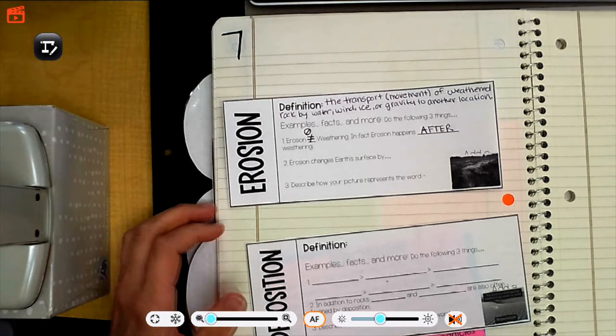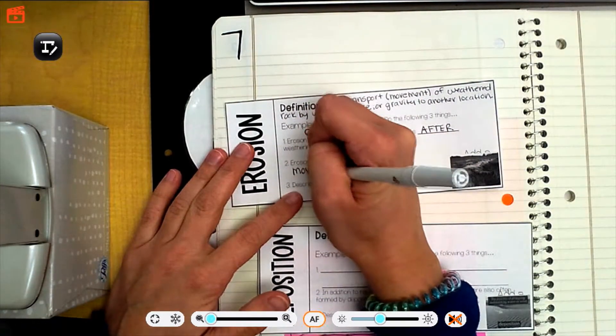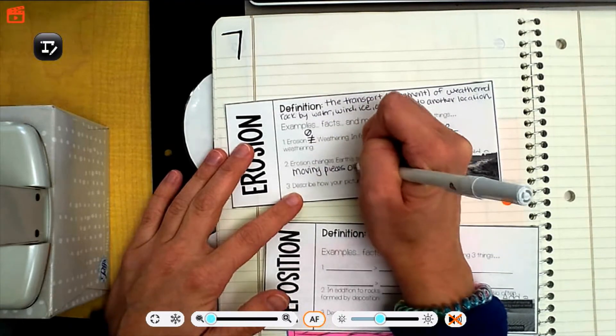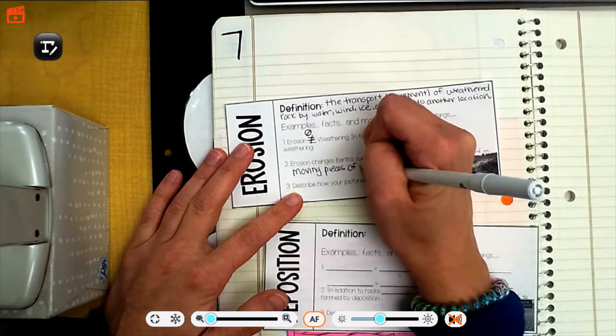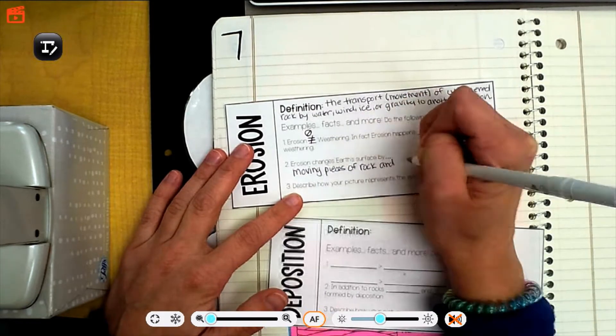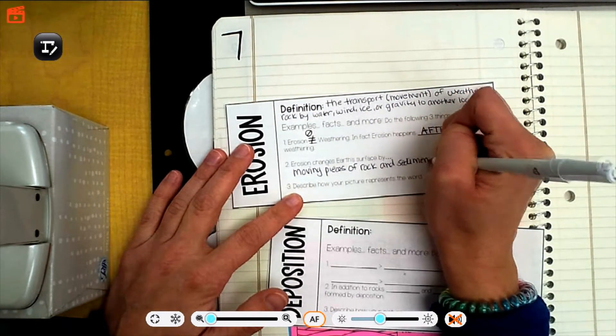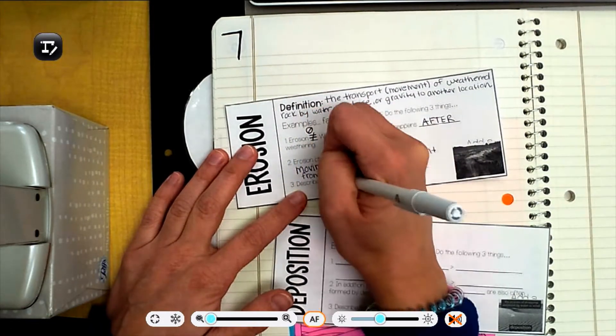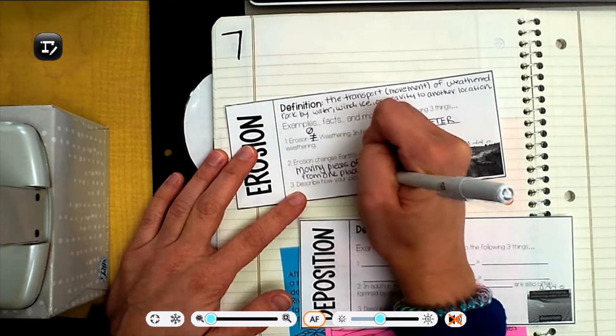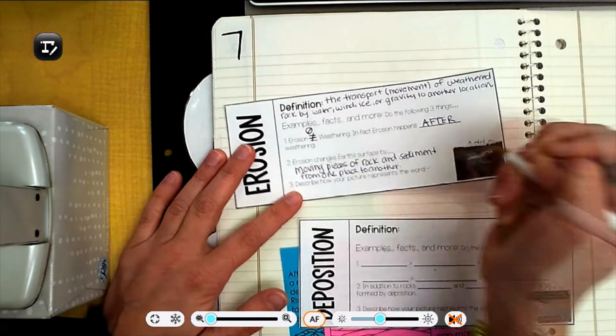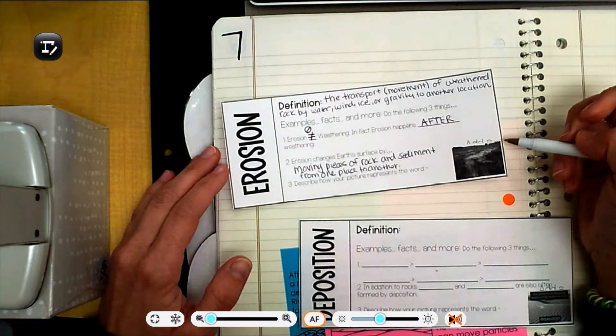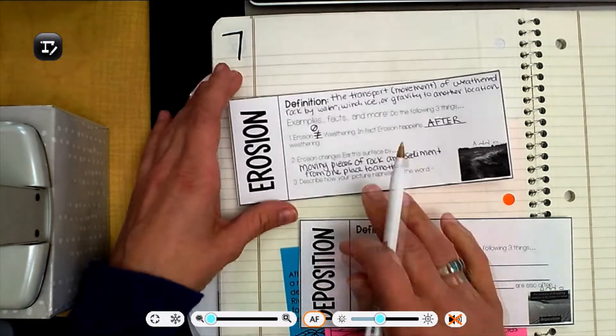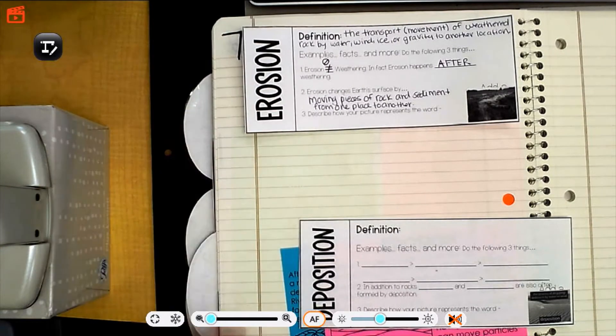Erosion changes earth's surface by moving pieces of rock and sediment. Remember that word sediment, little pieces of rock junk, broken up rock, sediment from one place to another. So if you look at this picture of what used to be, looks like a prairie or a nice side of a hill, what happened there? And explain how that picture might represent the word erosion. Eventually that's going to get glued in at the top of the page.